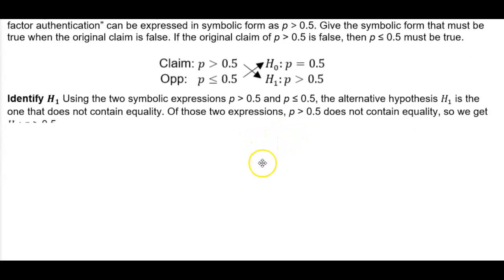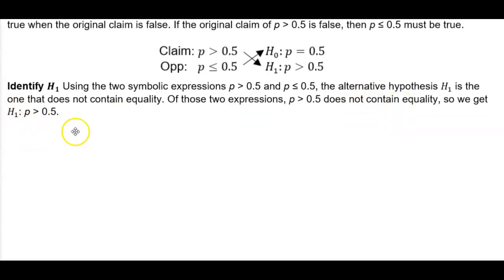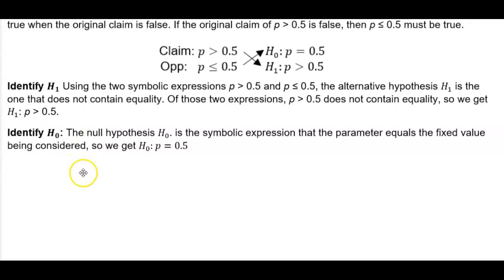Identifying the null, we saw that using the two symbolic expressions, P is greater than 0.5 and P is less than or equal to 0.5, the alternative hypothesis is the one that does not contain the equality. Of those two expressions, P greater than 0.5 does not contain the equality, so we say that the alternative hypothesis is where P is greater than 0.5.